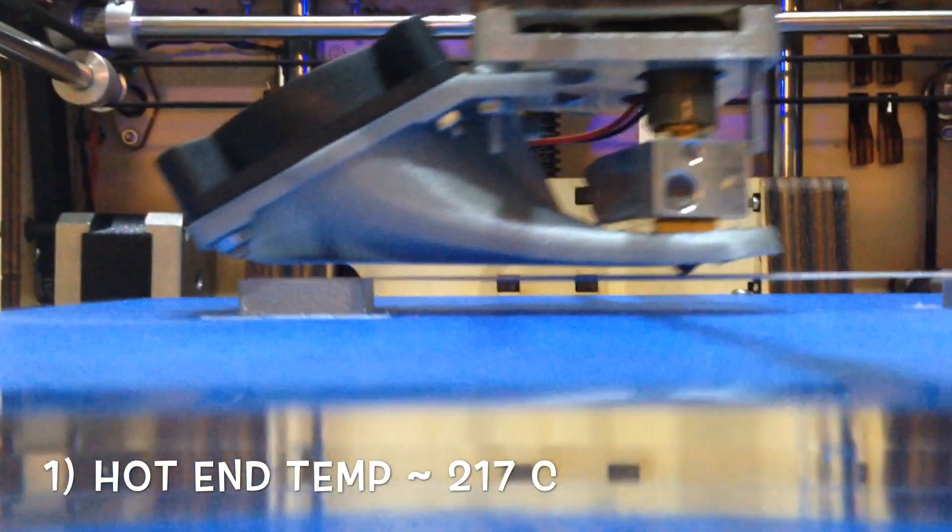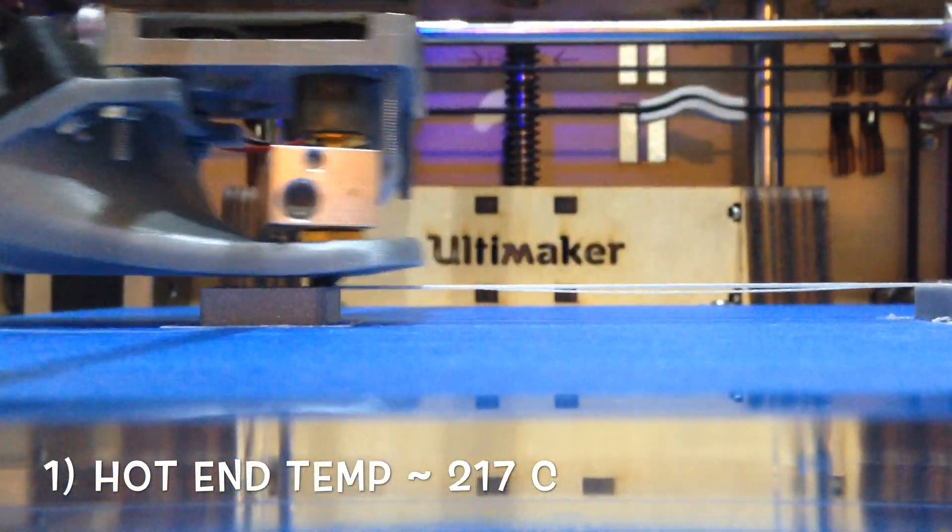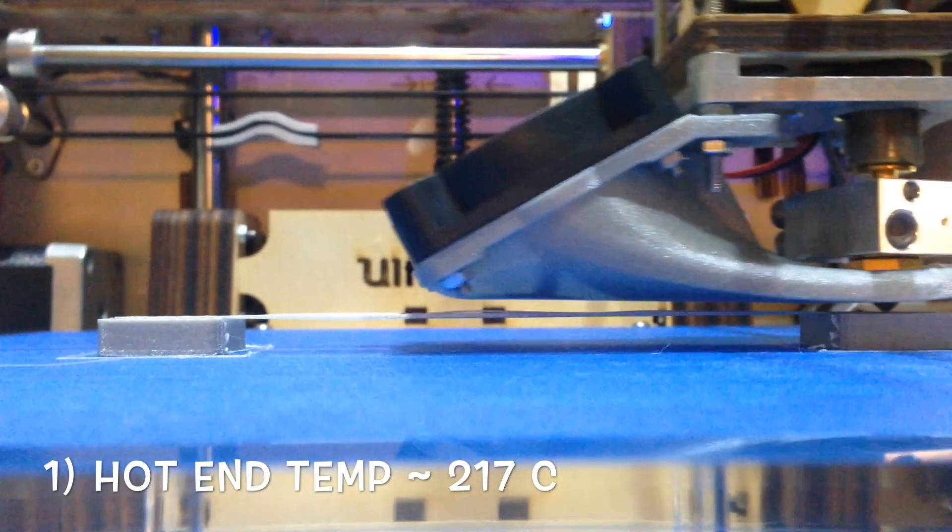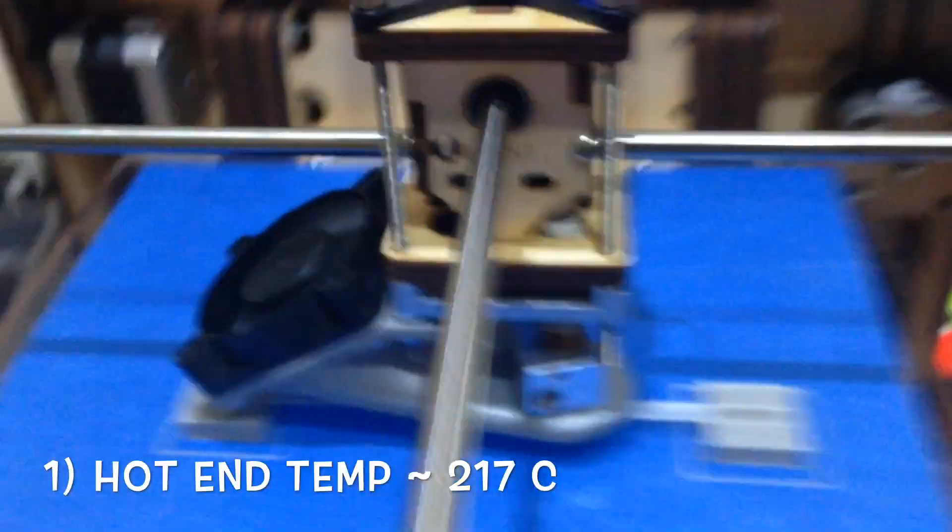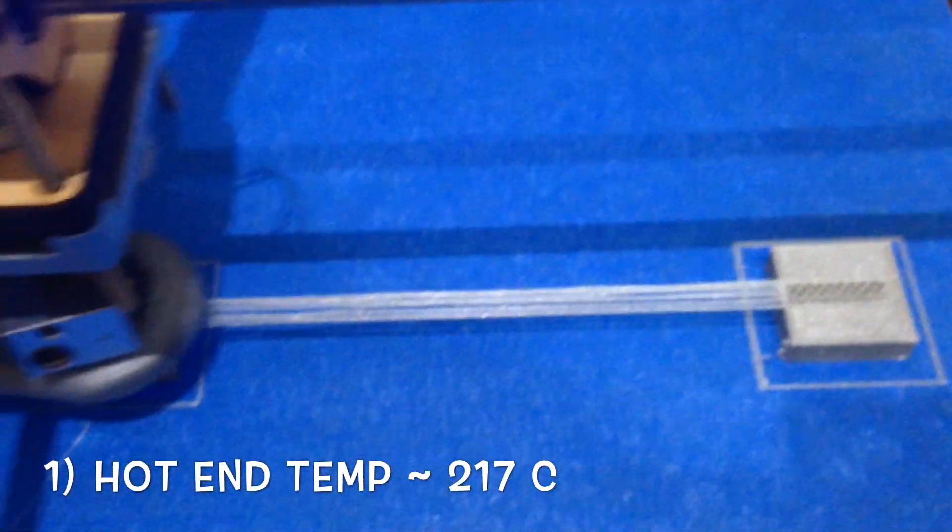You have to make sure that you have three things set up right to be able to do this. The first one is making sure your hot end is the correct temperature, but if it's too hot then the filament will droop. If it's too cold then your extruder will have a hard time pushing the filament through the nozzle. For PLA I found that it works best at 217 degrees Celsius.